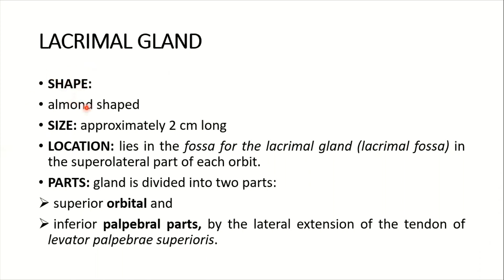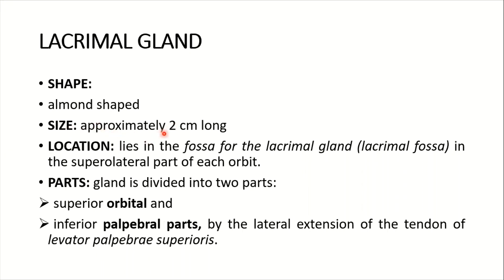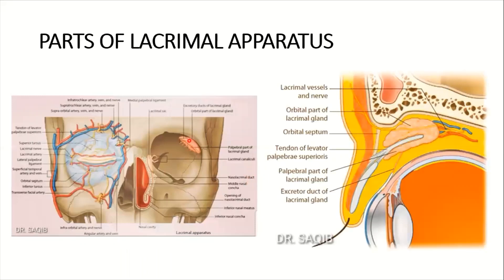The shape of the gland is almond-shaped, approximately two centimeters long. It lies in the lacrimal fossa, which is the fossa for the lacrimal gland, located in the supralateral part of each orbit.